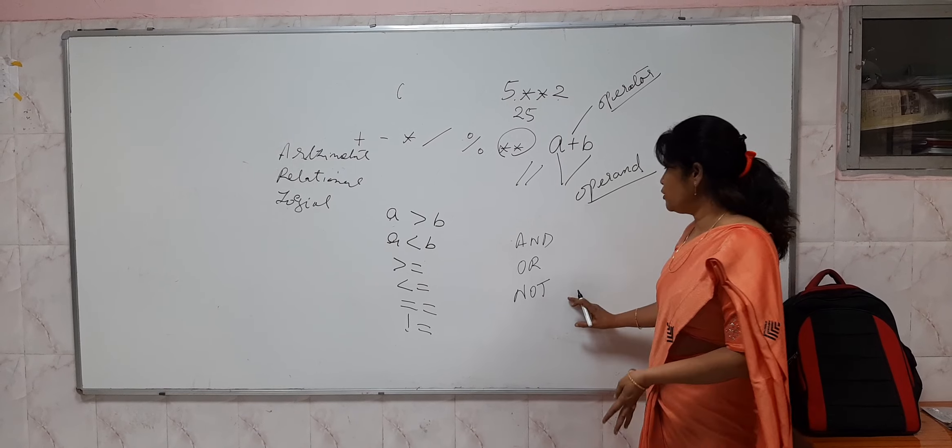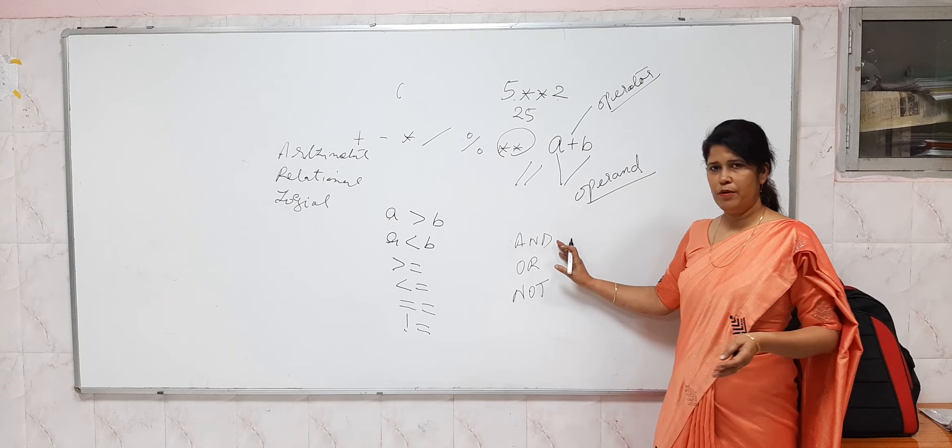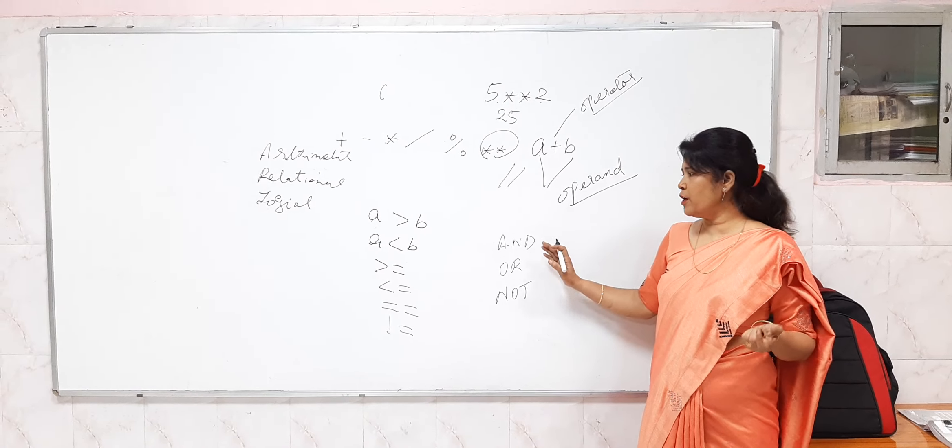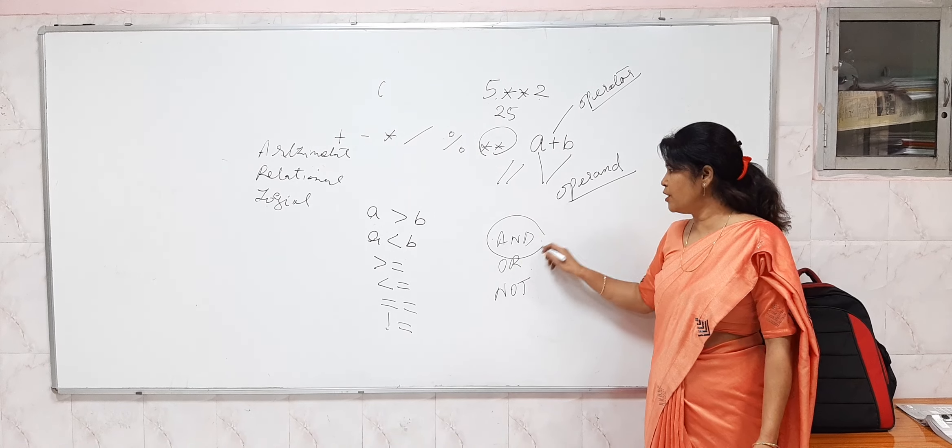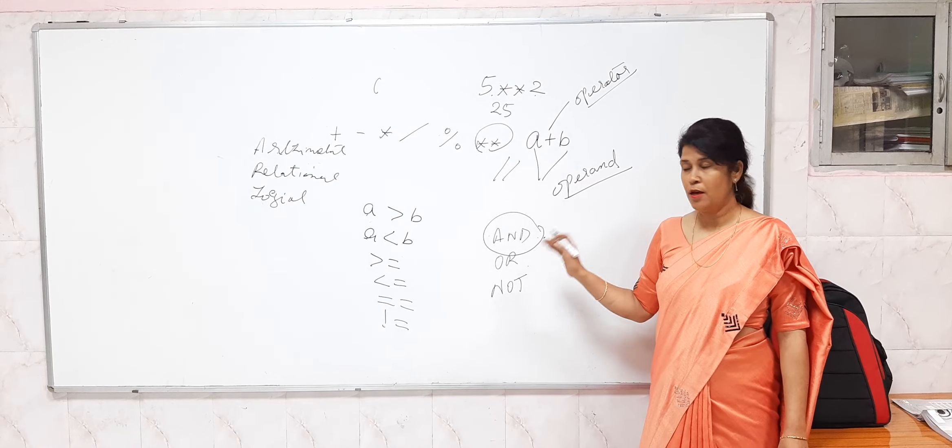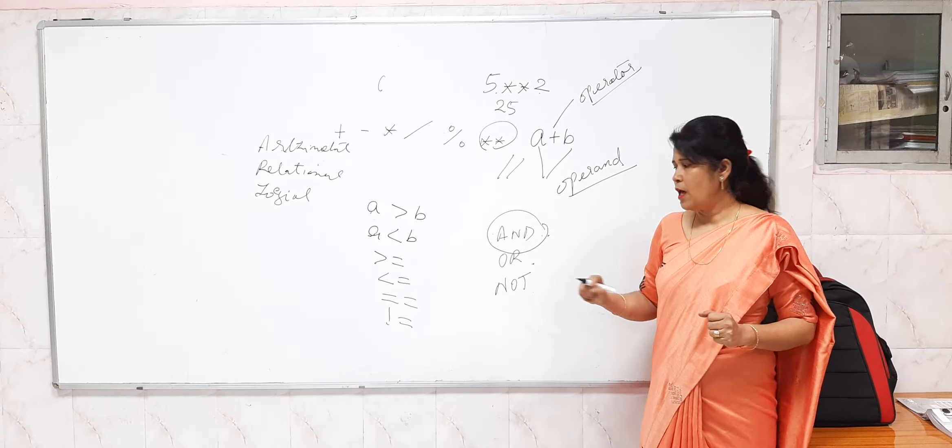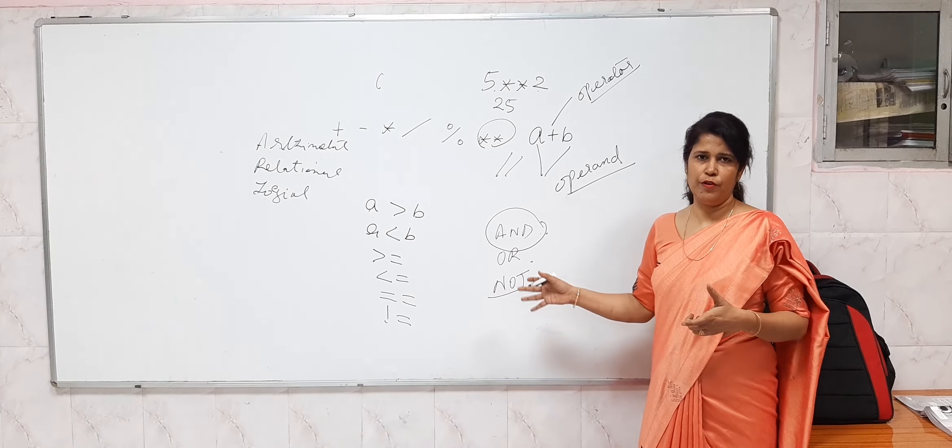These operators are for combining conditions. We use logical operators and, or, and not. Both conditions should be true in the and case. Or means either condition is true, and not means the opposite of it.